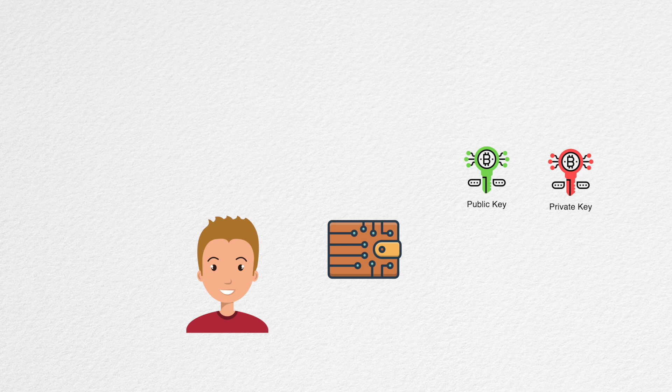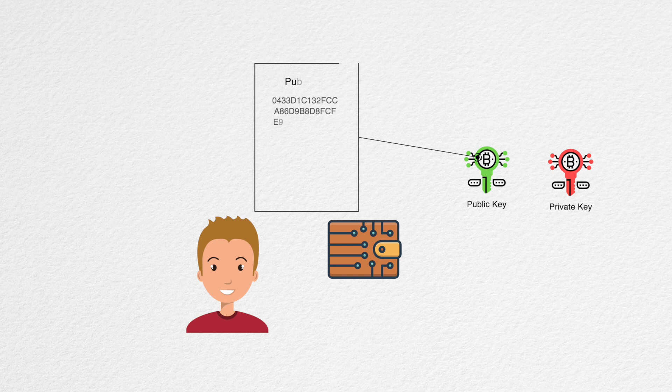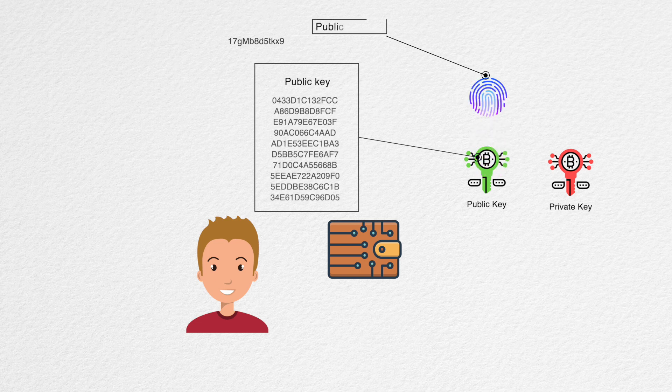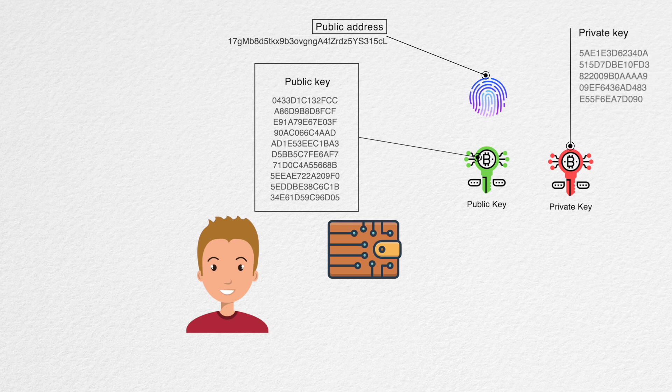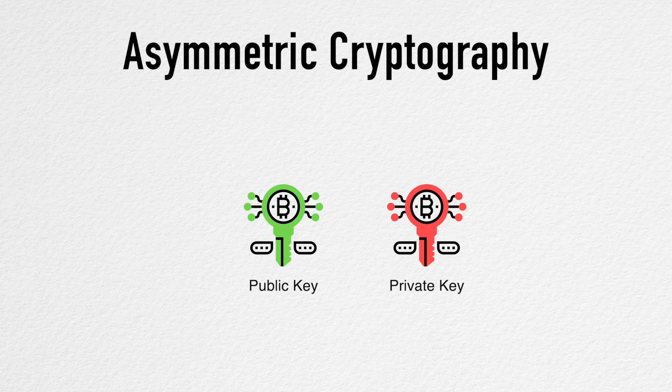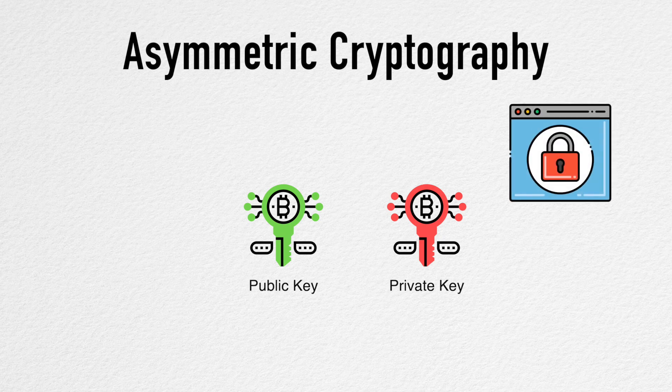The public key serves the role of account numbers and the private key the role of a password. To receive money from someone, you just share your public key or public address, which is just a shorter version of your public key. When you want to spend the money in your account, you need to authorize using your private key. This idea of key pairs comes from the area of asymmetric cryptography, which has been around for almost half a century. In fact, every time you open a secure web page, asymmetric cryptography is working its magic behind the scenes.